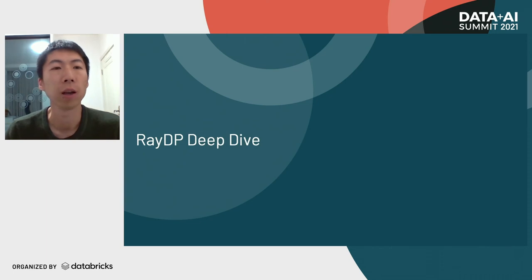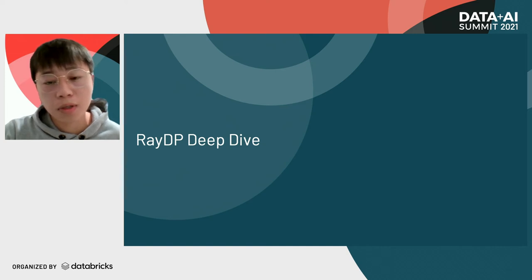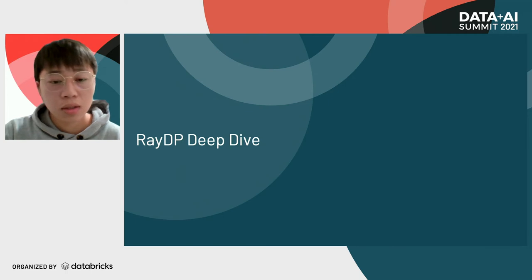Now let's welcome Shenyang to give an introduction of the RayDP API and architecture design. Hello everyone, I'm Shenyang, also from Intel. My colleague Carson has given you some background about Ray and RayDP. Now I will give you more details about the RayDP implementation and also show some examples of how to use RayDP and other Ray components to write end-to-end solutions based on Ray.